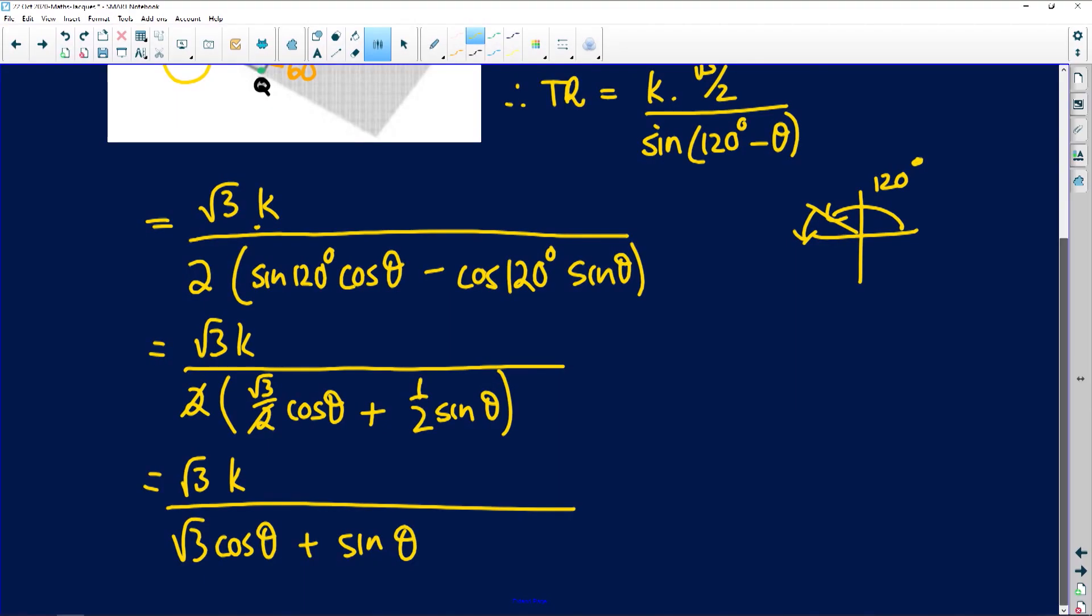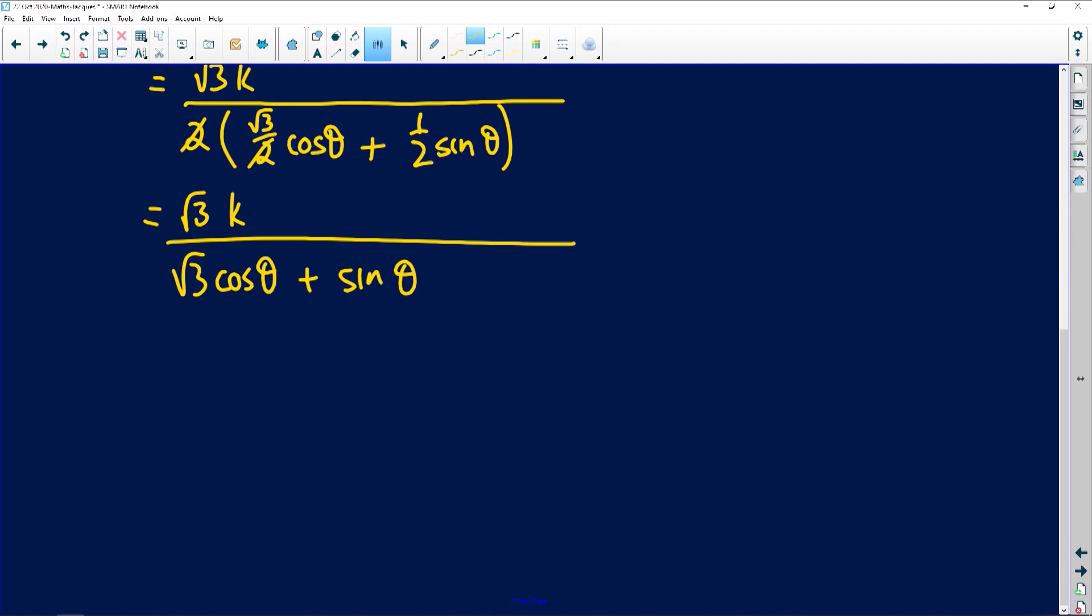The second part now asks us to show that RS, we need to find something about RS. This is part two. RS is equal to 3k divided by twice the root of 3, multiplied by the cosine of theta plus the sine of theta, and folks they are both in a bracket.